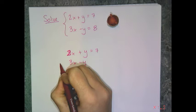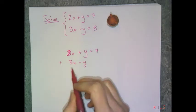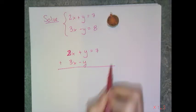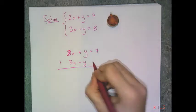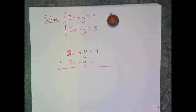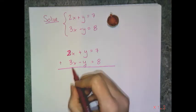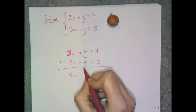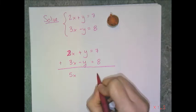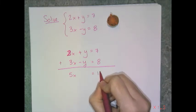The properties of equality tell me I have to add the same quantity to both sides. But in this case, I know that 3x minus y also happens to equal 8. So instead of adding 3x minus y to the right side, I'm going to add 8. And so now when I add things up, I get 2x plus 3x, which is 5x; y plus negative y, which is no more y's; and 7 plus 8, which is 15.